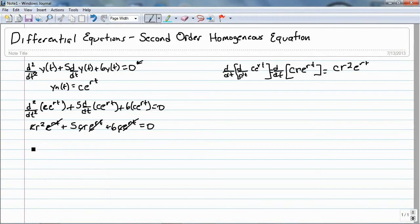And that just leaves me with r² plus 5r plus 6 equals zero. And I can take and factor this.